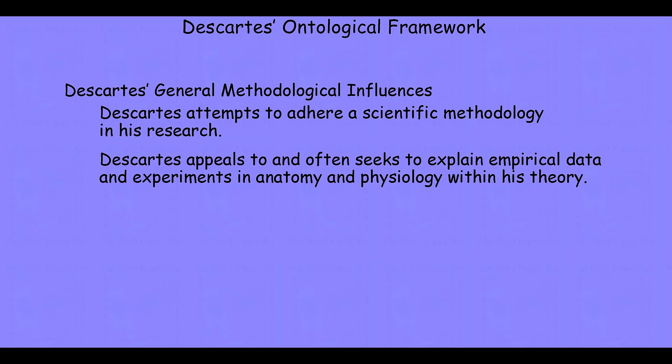Descartes appeals to and often seeks to explain empirical data and experiments in anatomy and physiology within his theory. Because he's carefully defining his concepts and trying to tie his concepts through operations to the phenomena he wants to explain, we see him trying to formulate a mechanistic anatomy and physiology and extend it beyond the scope of what the scholastics thought was possible, in order to provide a mechanism to help him explain mind-body interaction.